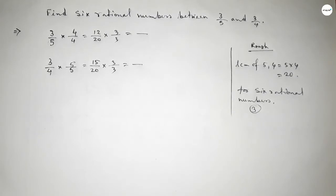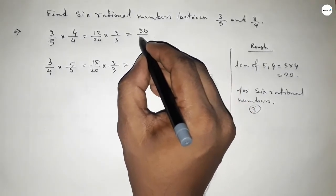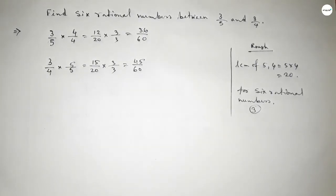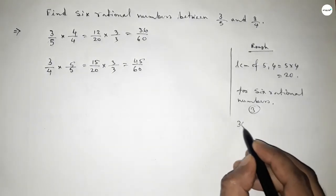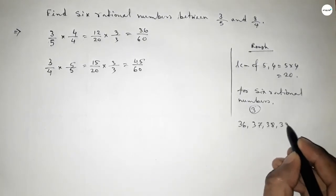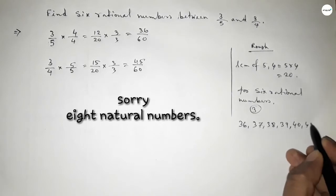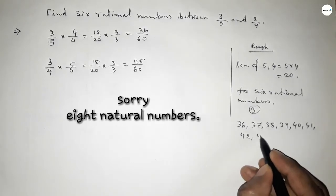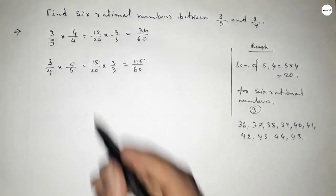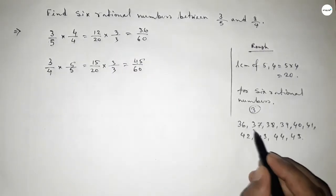Now between 36 to 45 we can find 9 natural numbers, and by these natural numbers we can form rational numbers. But here we need only 6 rational numbers, so we take these natural numbers to form 6 rational numbers.